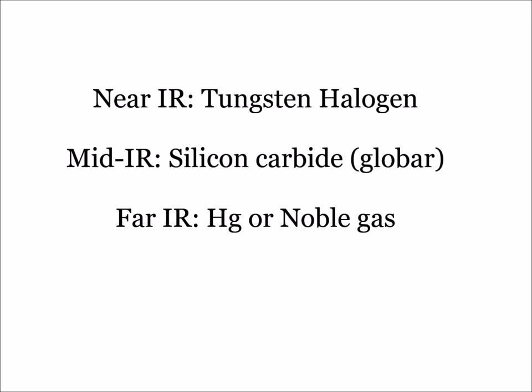The mid-IR region, which is between 5,000 to 400 wavenumbers, will most likely require the use of a heated silicon carbide glow bar. For most IR measurements, a mercury or noble gas discharge lamp can be used.